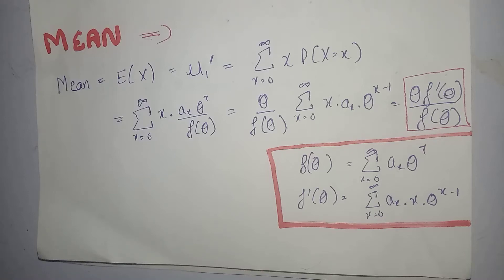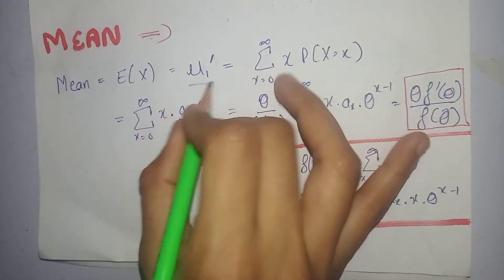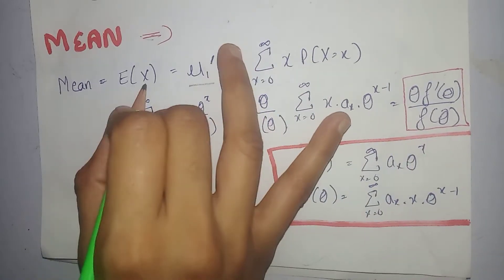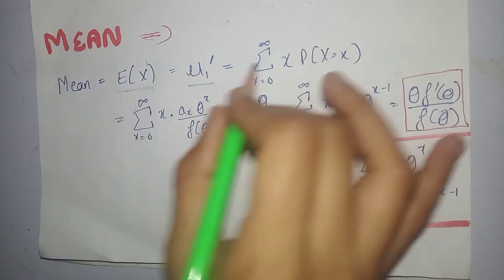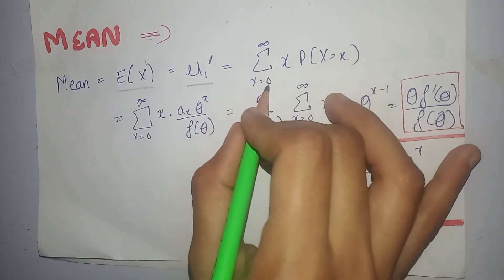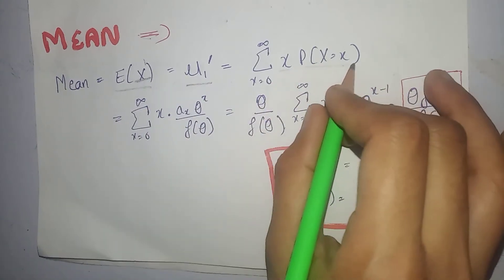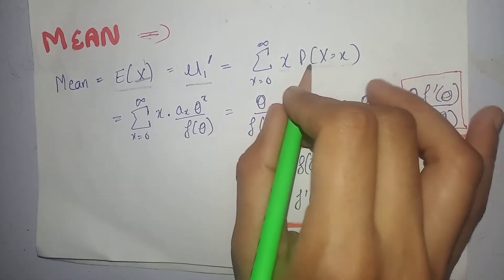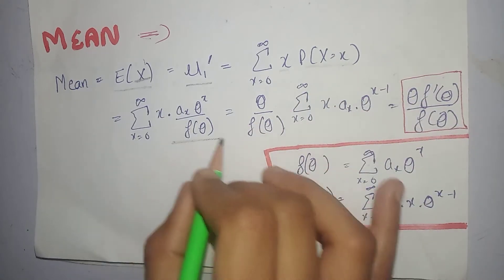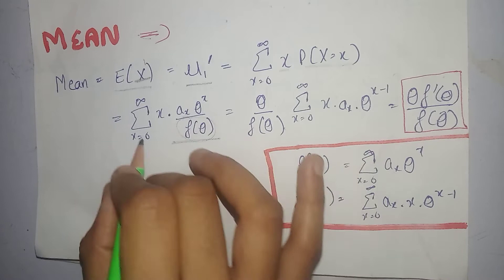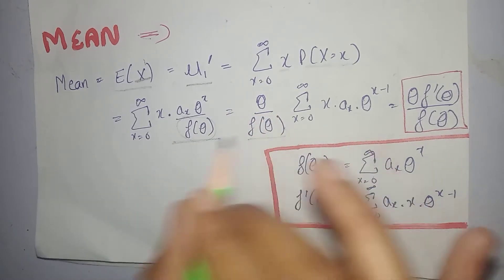Mean of power series distribution. Mean is denoted by mu1 dash, which is equal to expectation of x raised to power 1. Expectation ko hum kaise khol dete hain? Submission over all values of x, saath mein jis term ki expectation nikaal rahe hain, saath mein PMF of the power series distribution. Power series distribution ka PMF hum ne put kar diya. Now f(theta) mein x nahin hai, that's why this is the constant term, so hum isko summation se bahar nikaal sakte hain.